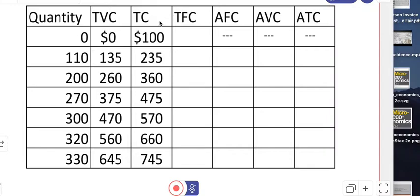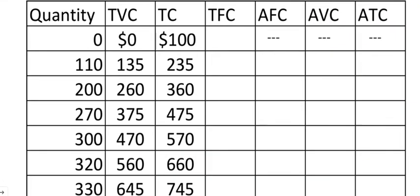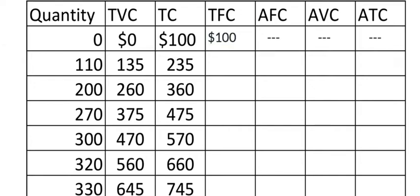We have the variable cost and the total cost. It makes sense that total variable cost is zero when you're producing nothing, because you're not producing anything, so you don't incur any variable expenses. But look at this — we still have $100 worth of total cost. Well, that must be the part explained by the fixed cost. So that means we can write in a figure for the total fixed cost, and that would be $100. In fact, that would be $100 every step of the way at all output levels. I'm just going to draw a blue line so that you know those figures are being repeated throughout this entire column.